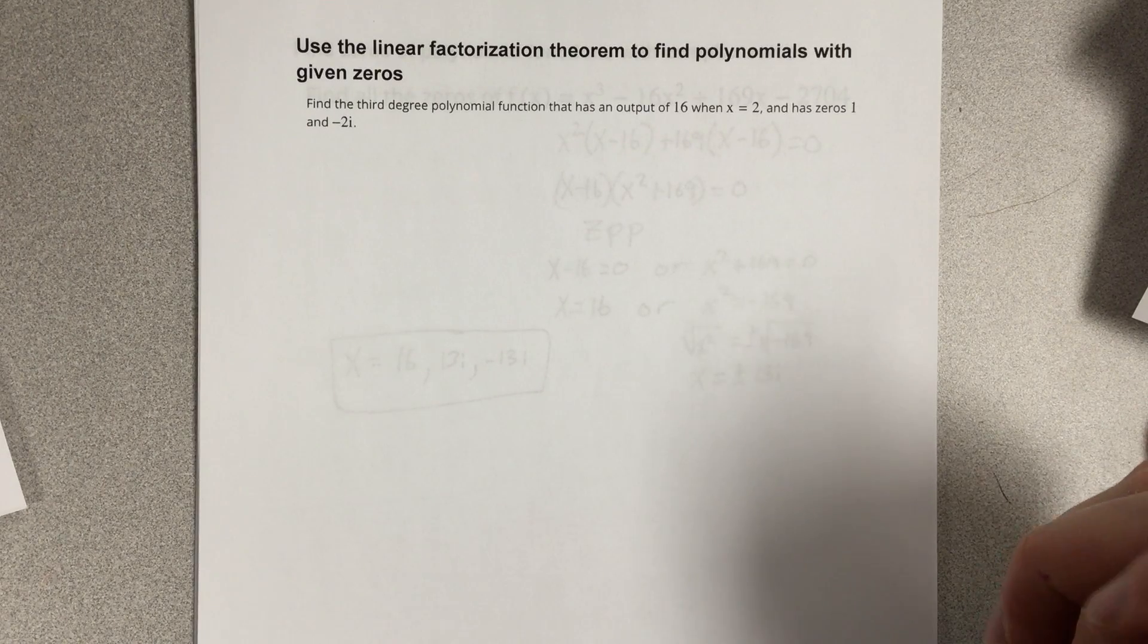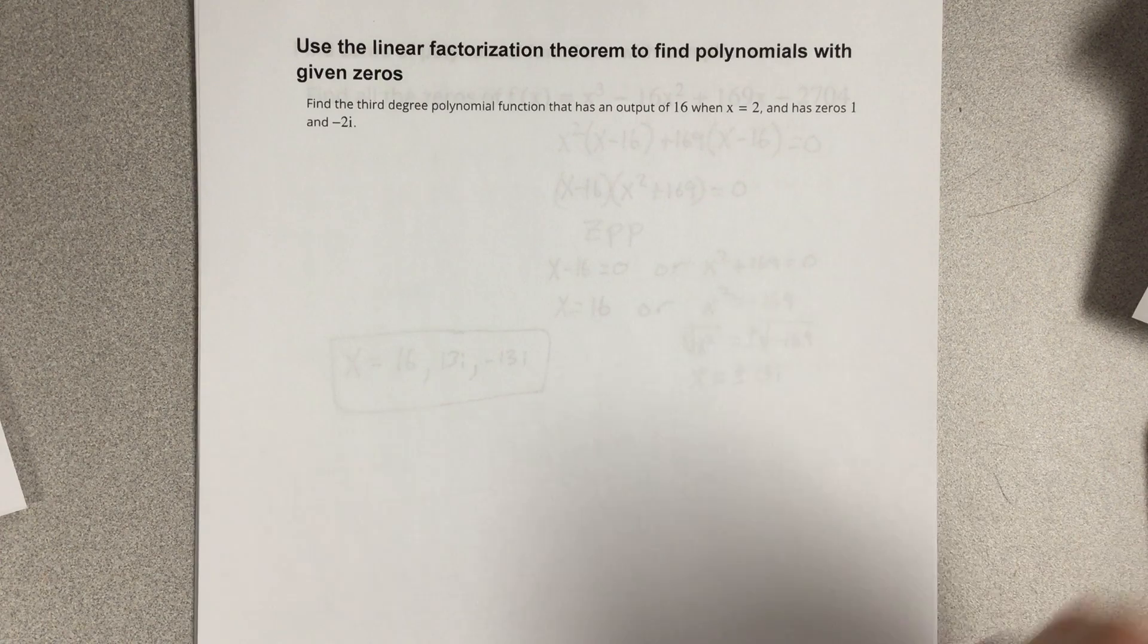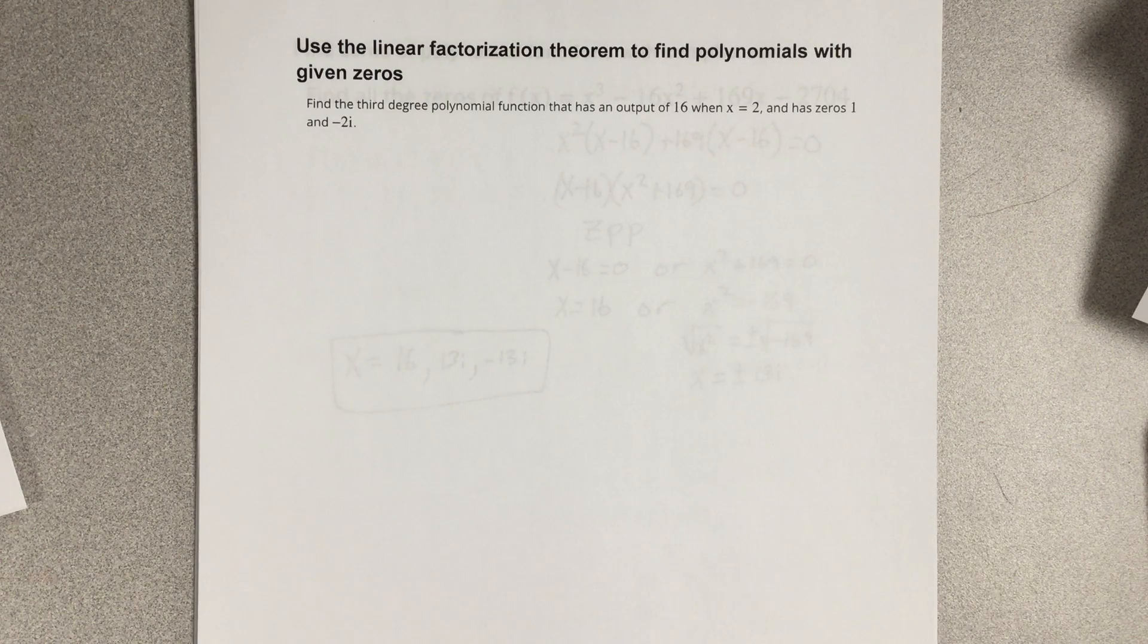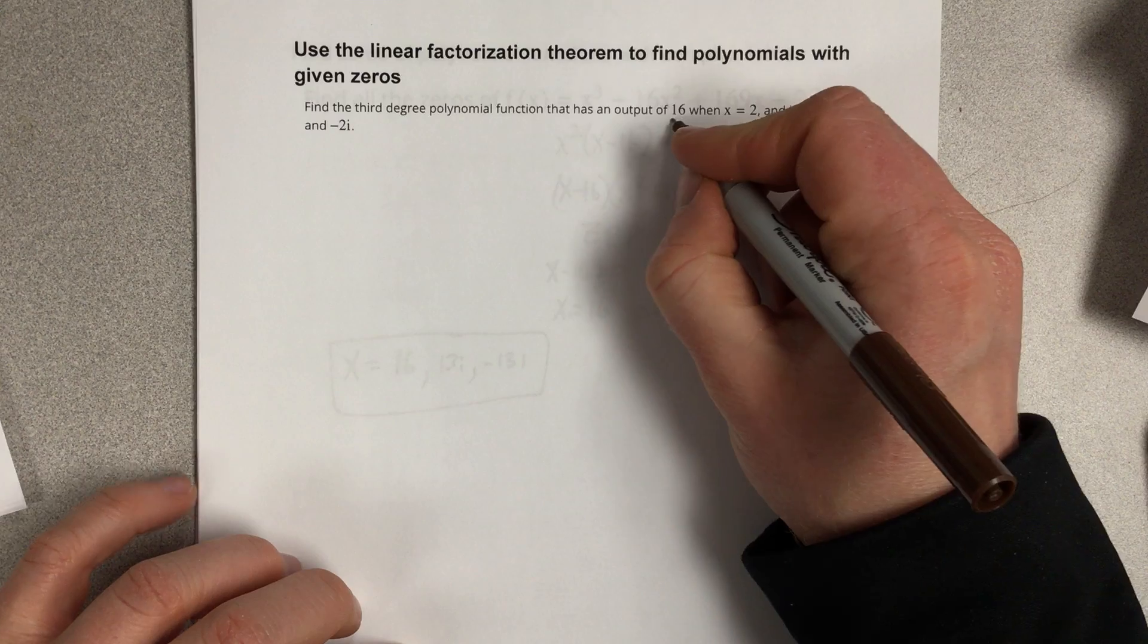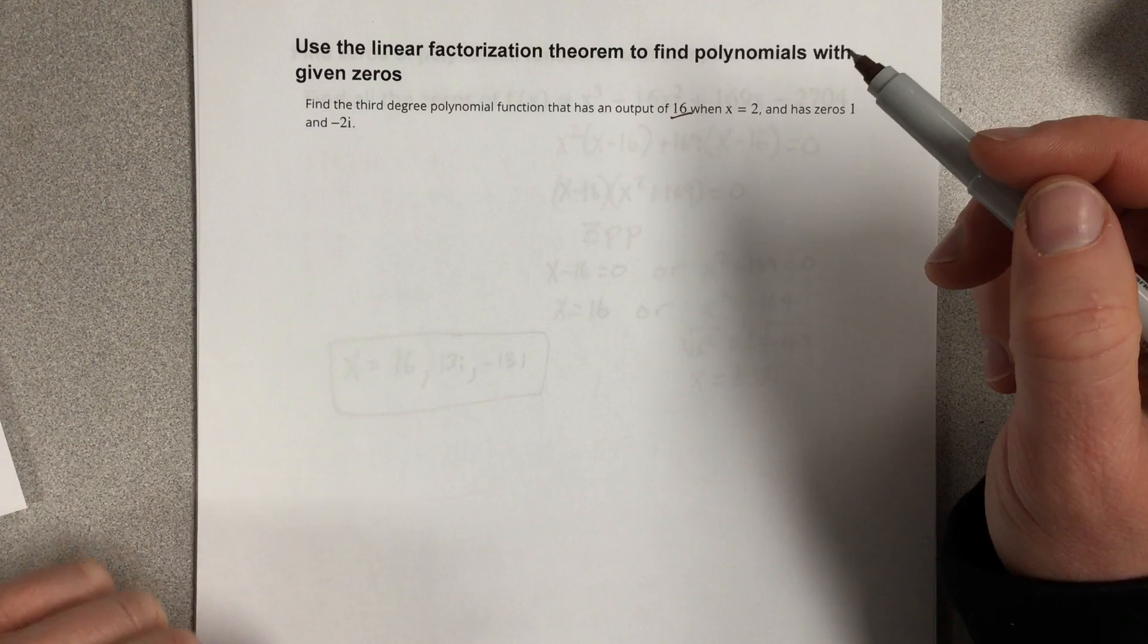In this video, we're going to use the linear factorization theorem to find polynomials with given zeros. It says find the third degree polynomial function that has an output of 16 when x equals 2 and has zeros 1 and negative 2i.